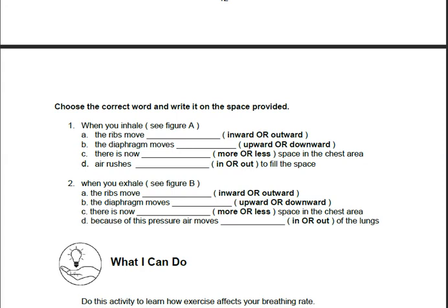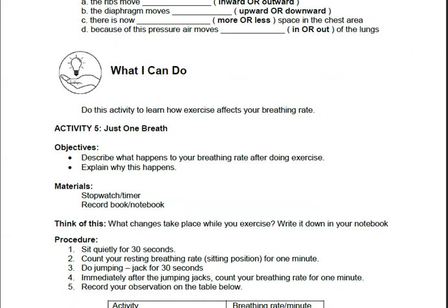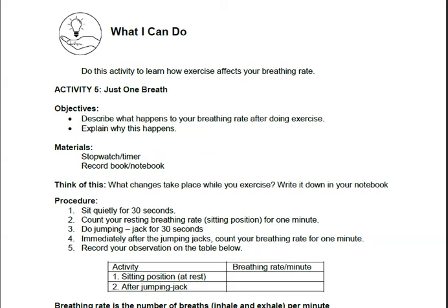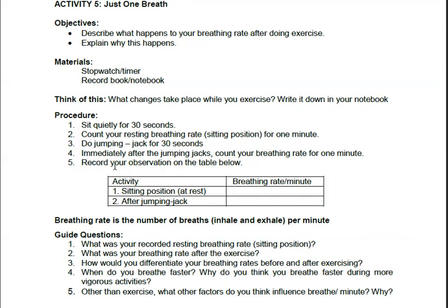Now let's go to the activity. After you answered What I Have Learned, you will go to Activity Number 5. This is What I Can Do — so you have to do this. Write down Activity Number 5: Just One Breath. Your objectives for this activity are to describe what happens to your breathing rate after doing exercise, and to explain why this happens. Your materials are a stopwatch or a timer, and your notebook or record book.